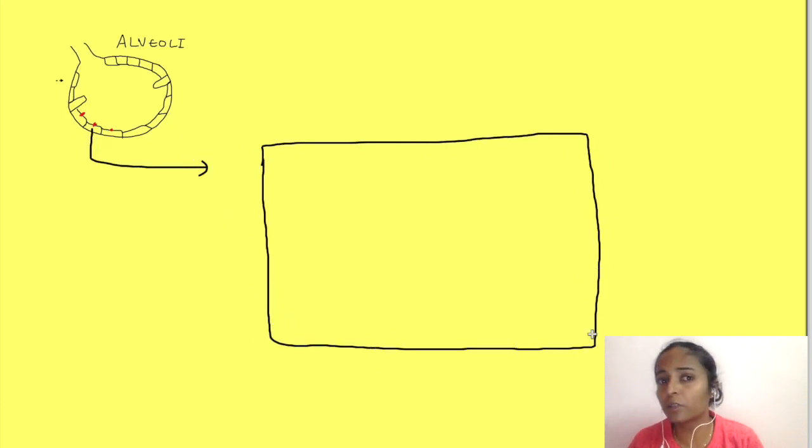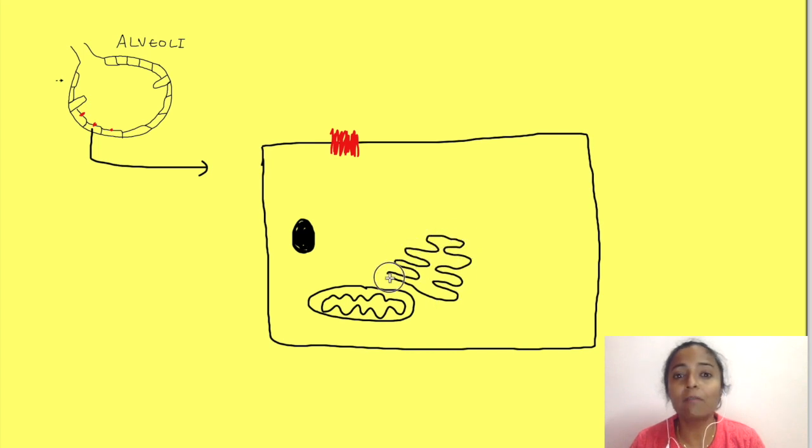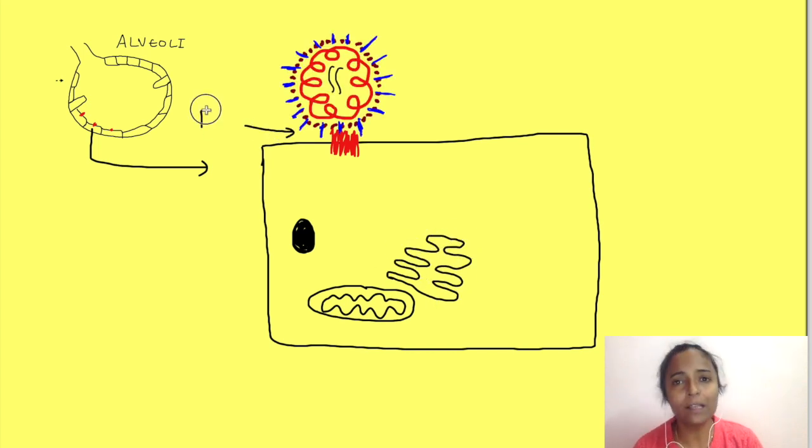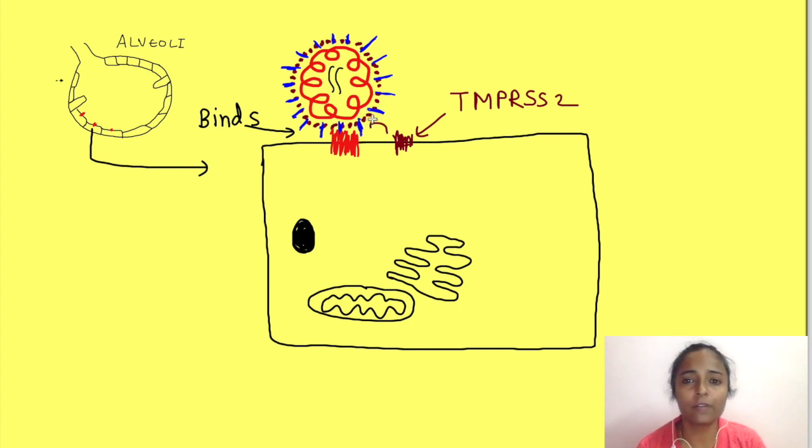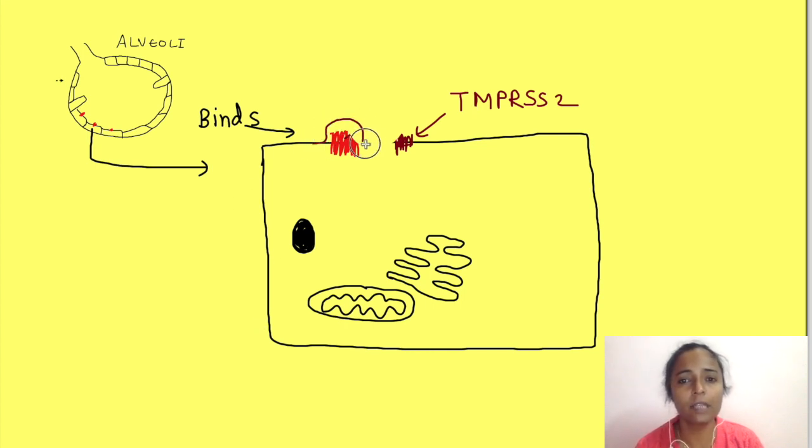The spike protein of coronavirus binds to this ACE2 enzyme present on alveolar epithelial cells. Once it binds, another protease enzyme named TMPRSS2 present nearby cleaves part of this S protein and activates it. Because of this cleavage, the envelope fuses with the alveolar cell membrane and the virion is taken up inside the cell by endocytosis.